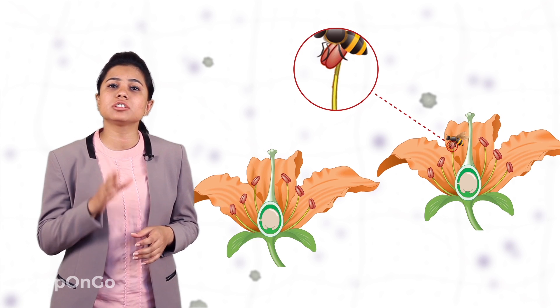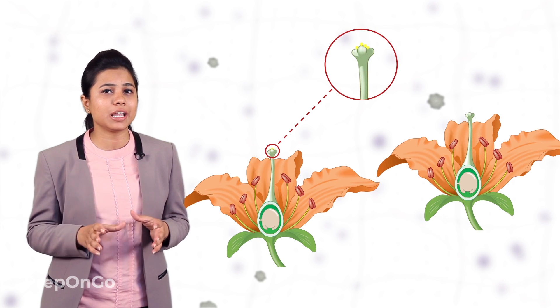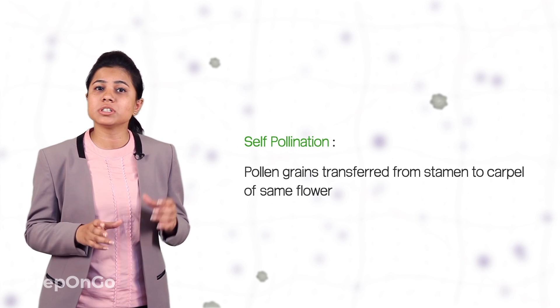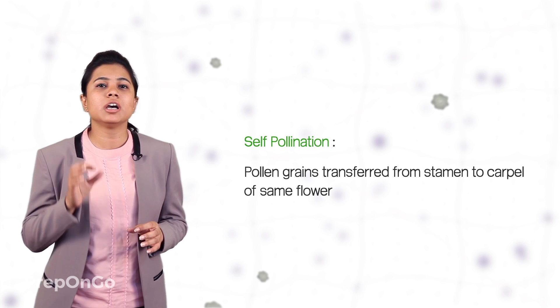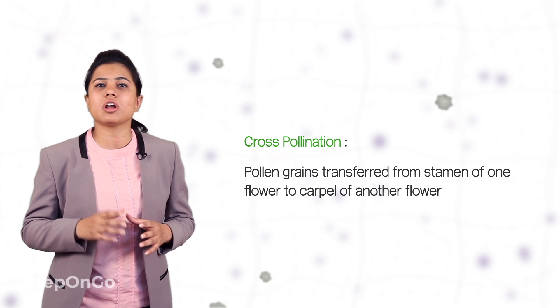Consider a bee which came to collect nectar. When the bee sits on the flower, the pollen grains from the anther in the stamens stick to its legs, and when it moves from one flower to another to collect nectar, these pollen grains drop off on the stigma of the carpel. Since the stigma is sticky, the pollen grains stick to it and pollination is achieved. If the pollen grains are transferred from the stamen to the carpel of the same flower, it is called self-pollination. When the pollen grains are transferred from the stamen of one flower to the carpel of another flower, it is called cross-pollination.